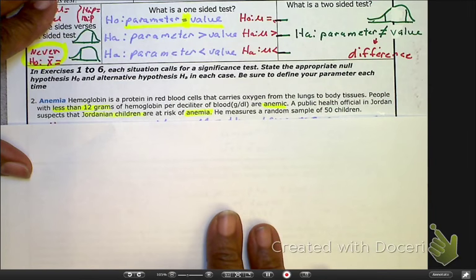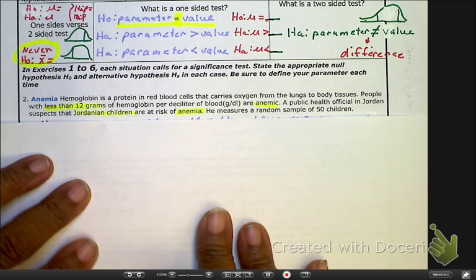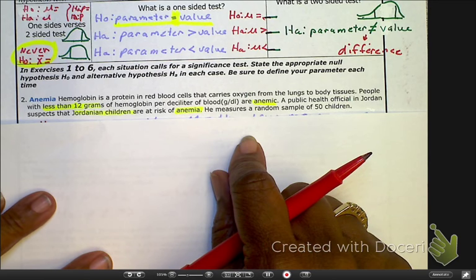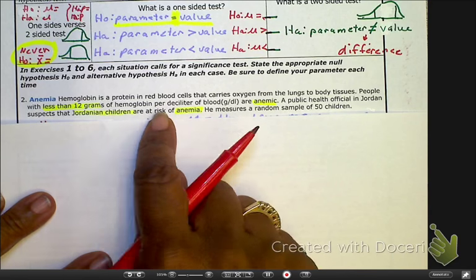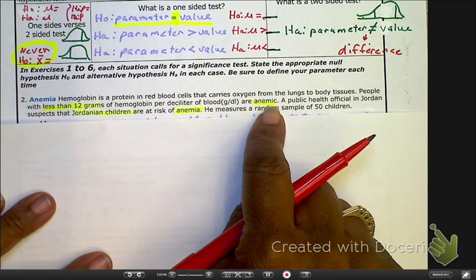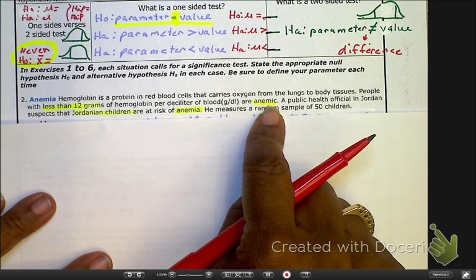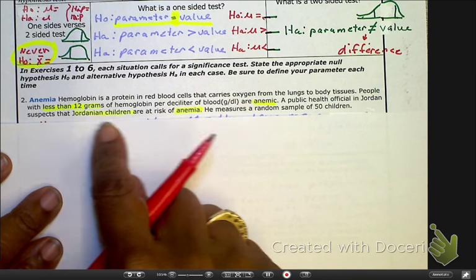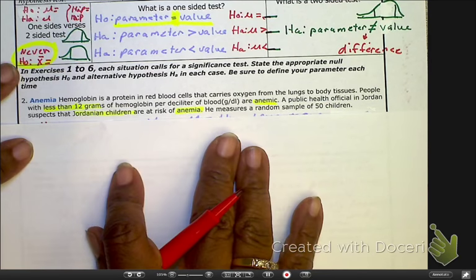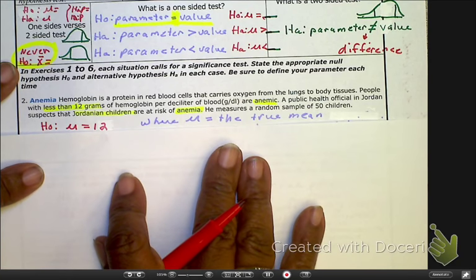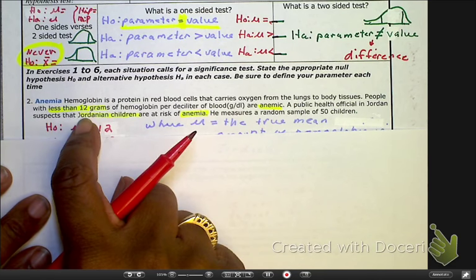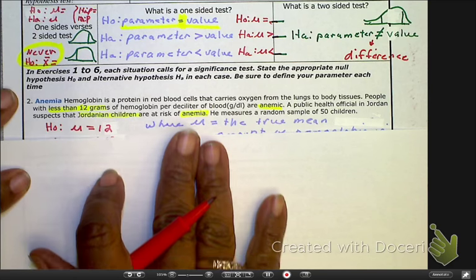Number two. So, we have here hemoglobin is protein in the red blood cells that carry oxygen from the lungs to the body tissue. People with less than 12 grams of hemoglobin per deciliter of blood are anemic. So, that tells us the population expectation is that mu is going to be 12. Let's keep going. The public health official in Jordan suspects that the children are at risk of being anemic. We've got a sample of 50.